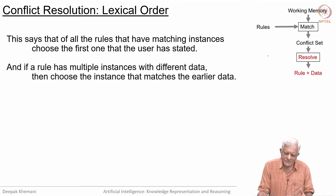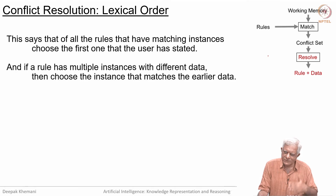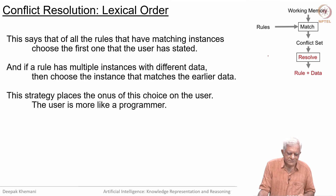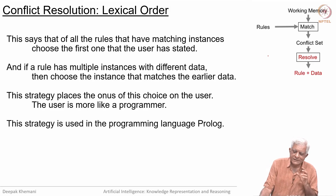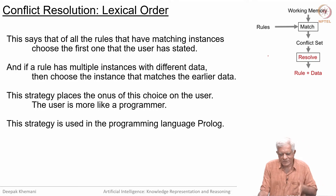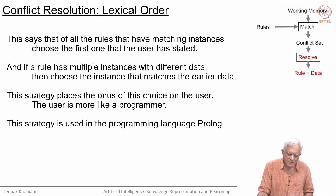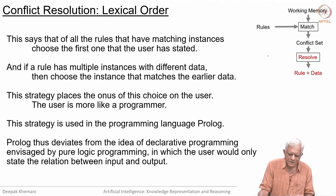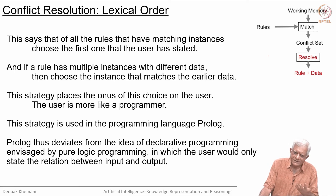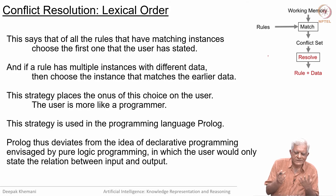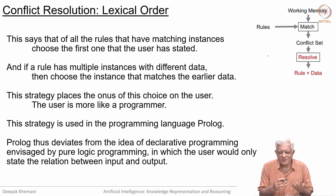If a rule has multiple instances that match with different data, choose the instance that matches the earlier data, because the data is also an ordered set. This strategy places the onus of the choice on the user — the user is more like a programmer. This is the kind of strategy that Prolog uses. Prolog looks at all rules in the order you have written them, and facts are also written in a particular order, so Prolog always looks at things in lexical order. Real Prolog deviates from pure declarative programming in that the order in which you state the rules is also important, which is a bit more like programming.